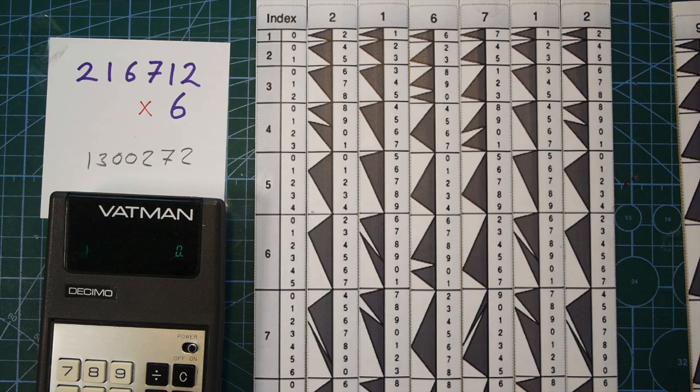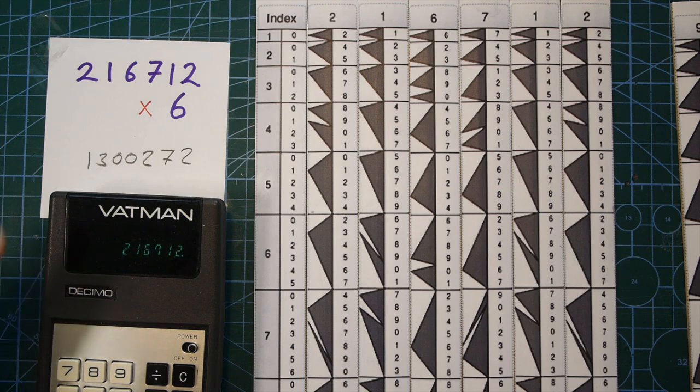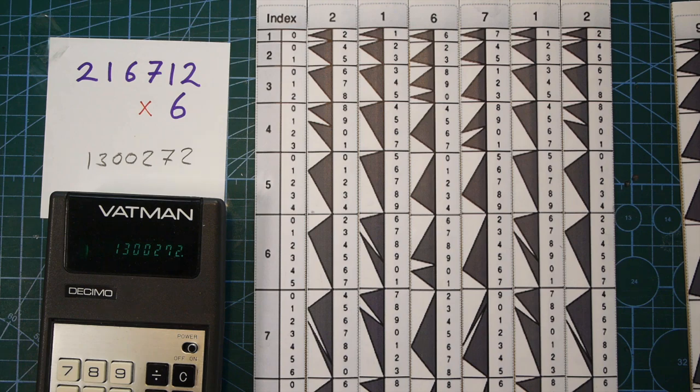So, do you really want me to check it or do you trust the rulers? So, two, one, six, seven, one, two times by six equals. And there it is. What is that? One million, three hundred thousand, two hundred and seventy-two.